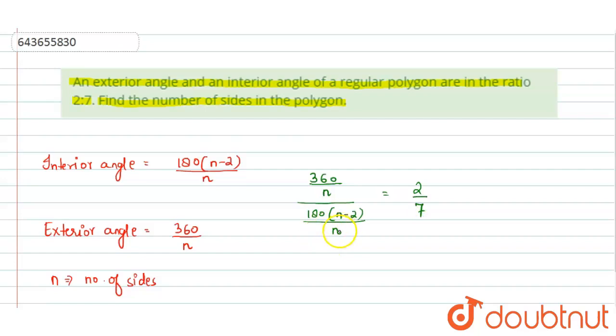Now you can first cancel this n with this n. So this can be written like 360 over 180 into (n minus 2) and this equals 2 by 7. Now you can cancel this 360 by this 180 and this will be 2 here, and you can also cancel this 2 with this 2. So finally you are getting n minus 2 equals 7, and this will give us n equals 9.